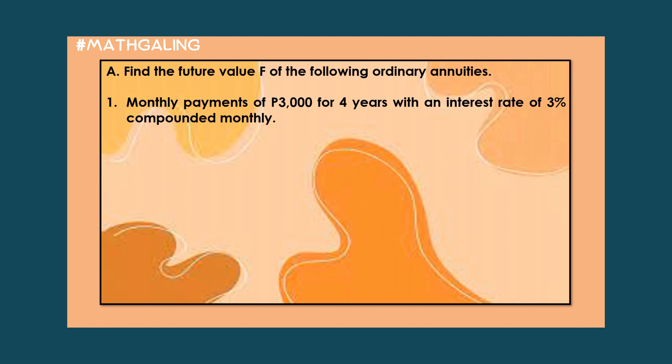So now let's begin. We are assigned to find the future value F of the following ordinary annuities. Monthly payments of P3,000 for 4 years with an interest rate of 3% compounded monthly.